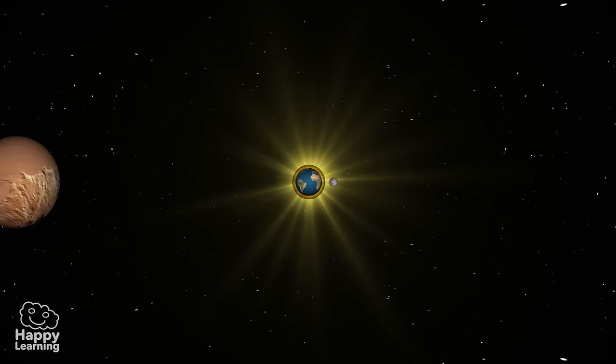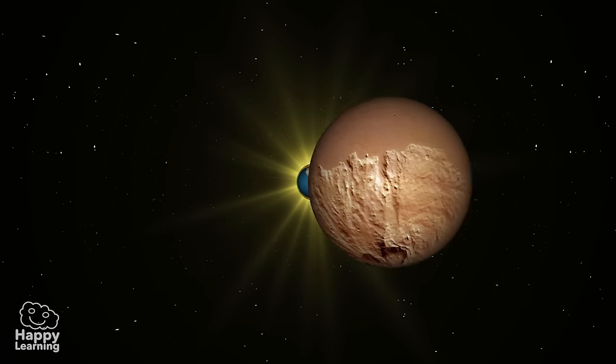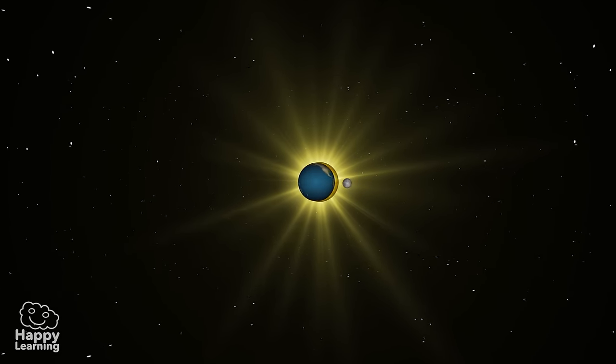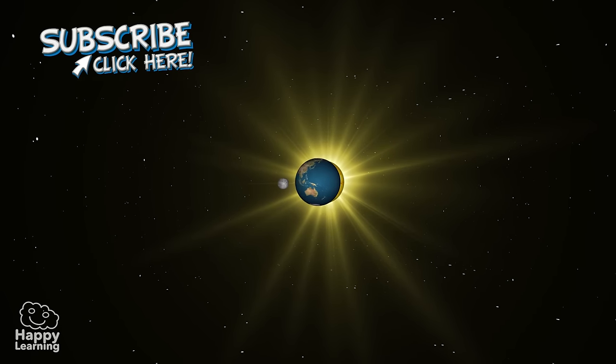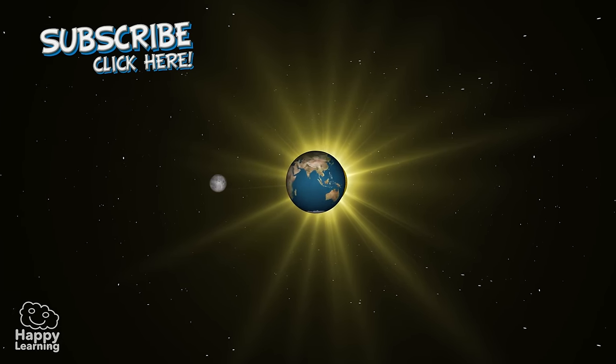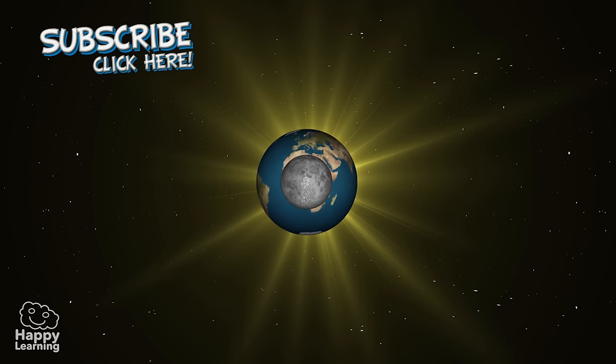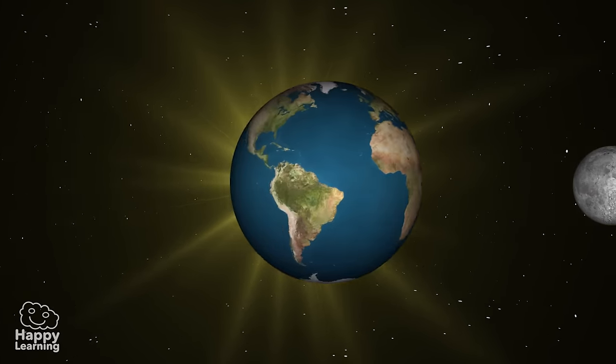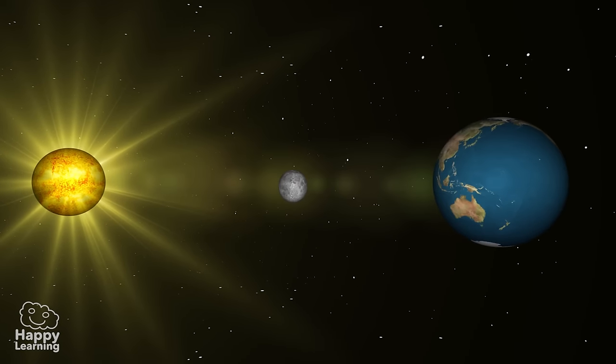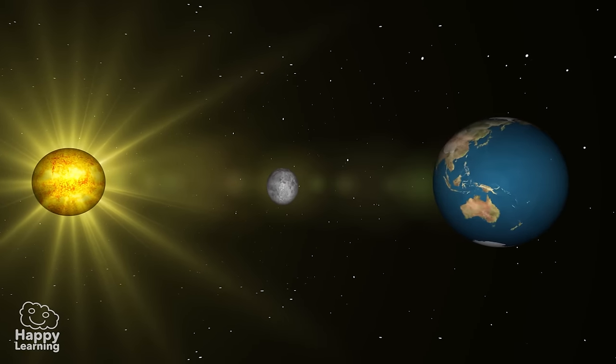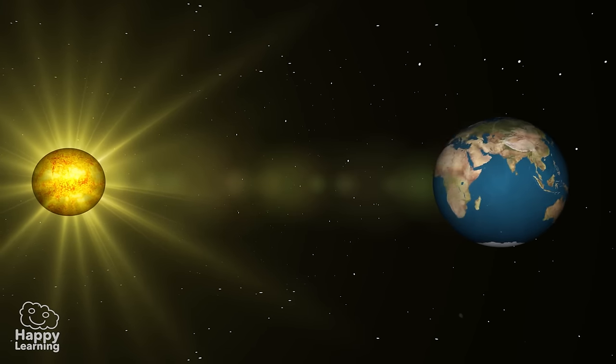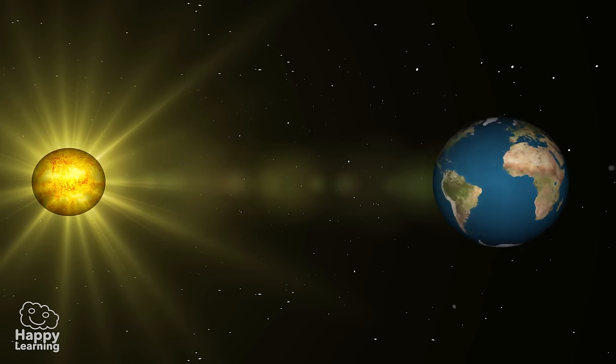But first, do you know what an eclipse is? An eclipse occurs when an astronomical object is temporarily obscured. Sometimes the Earth is placed between the Sun and the Moon, and other times the Moon is situated between the Earth and the Sun. These are eclipses. But let's investigate it better.